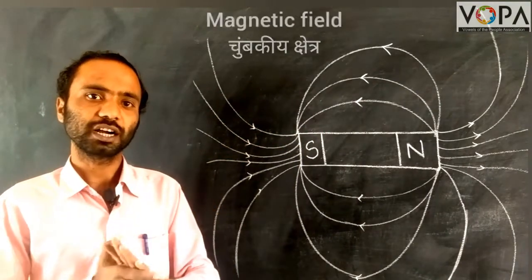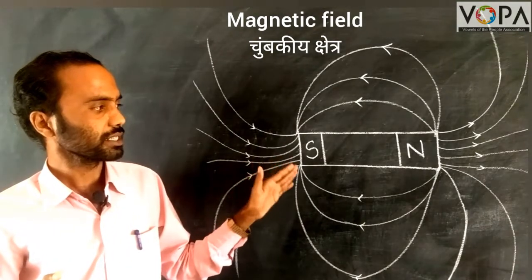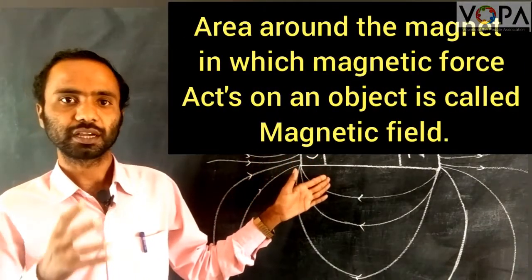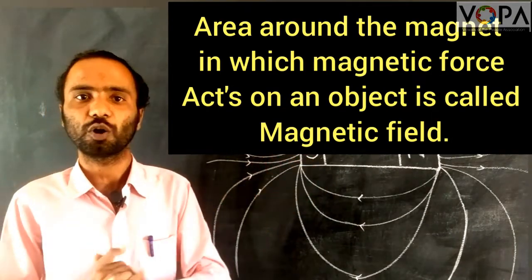Now we will learn what the magnetic field is. Magnetic field is the area around the magnet in which the magnetic force acts on an object.